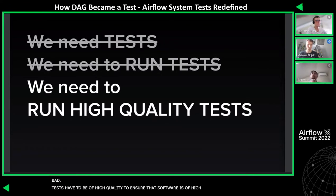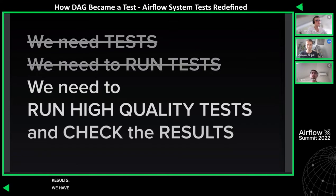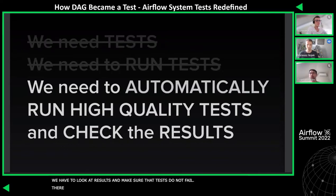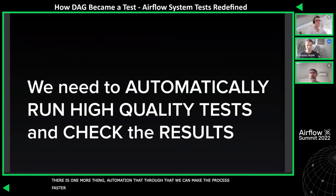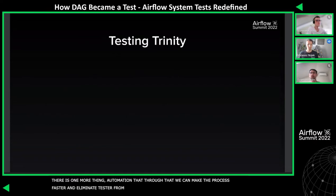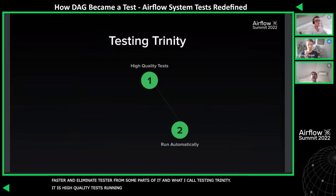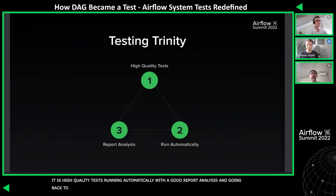What else? The results. We need to look into the results and make sure that the tests do not fail. There's one more thing: automation. Through automation, we can make the process faster and eliminate a tester from at least some parts of it. So here's what I call a testing trinity: high quality tests, running automatically, with a good report analysis. Going back to Airflow, we have many different tests — we have unit tests, we have integration tests,